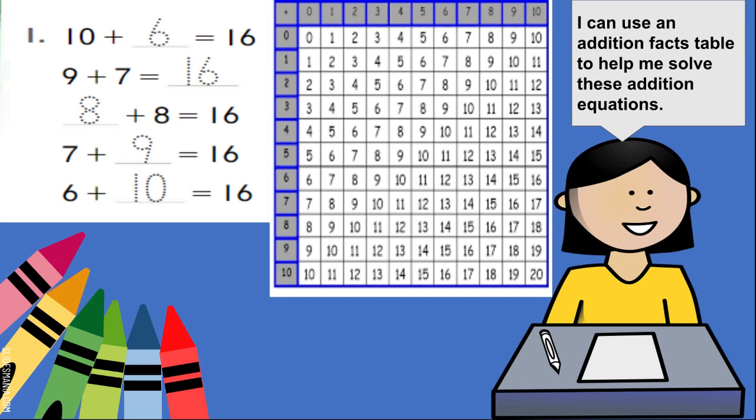Now, do you see something that's happening right now? Yes, if you said that you can see a diagonal number pattern with the sum of 16, then you are correct. All of these addends help us to get to 16.